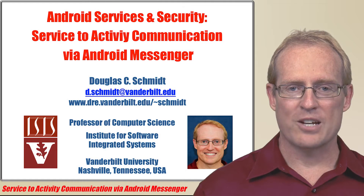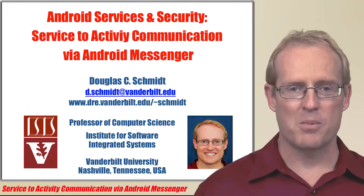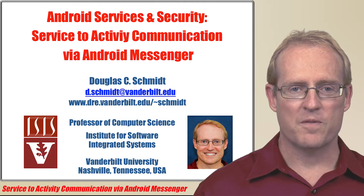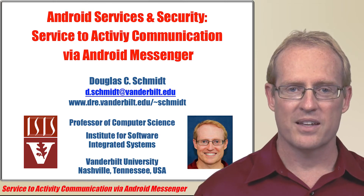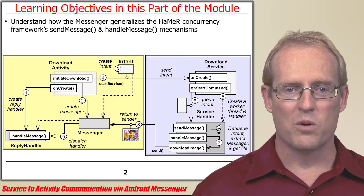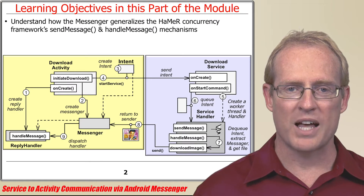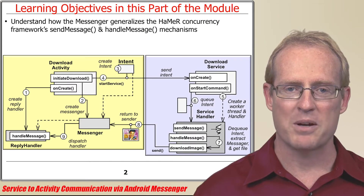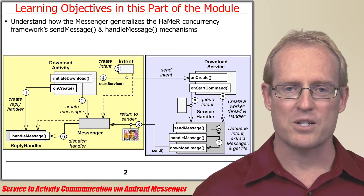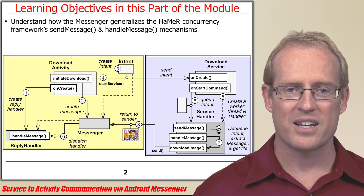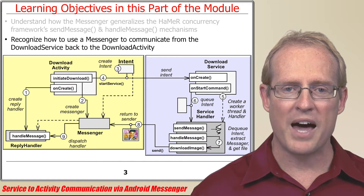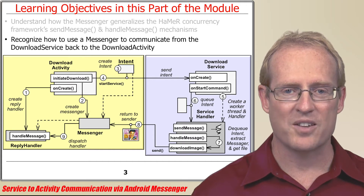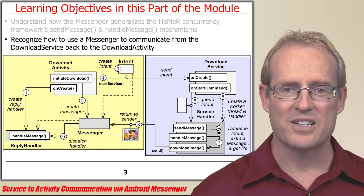Welcome to the next part of the module on Android services and the local inter-process communication mechanisms, which focuses on service-to-activity communication via the Android Messenger communication mechanism. In this part, we'll first explain how the Messenger generalizes the Hammer concurrency framework send message and handle message mechanisms to work across component and process boundaries. We'll also show how an Android Messenger object can be used by the download service to communicate the path name to the retrieved image back to the download activity, so the image can be displayed to the user.